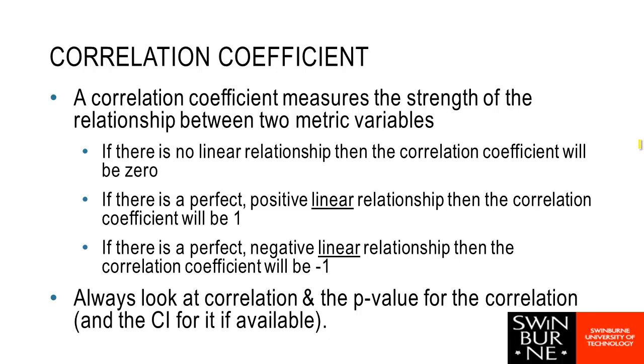So that's telling me when one variable goes up, the other one tends to go down. If we have a correlation coefficient that's close to 0, then that's telling me that we think that there is no linear relationship.